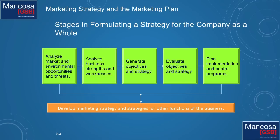Let's look at the stages in formulating a strategy for the company as a whole, because before you can look at your marketing strategy you have to understand its role within the context of the main business. You're going to analyze your market environmental opportunities and threats, then analyze your business strengths and weaknesses. Opportunities and threats are external; strengths and weaknesses are internal. Then you put together a SWOT, generate your objectives and strategy, evaluate those objectively, and create the plan with which you'll implement those strategies and the control programs with which you measure.